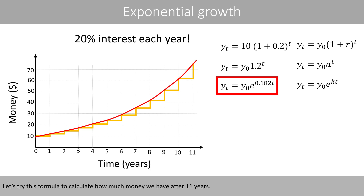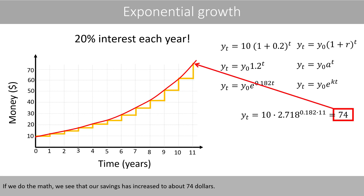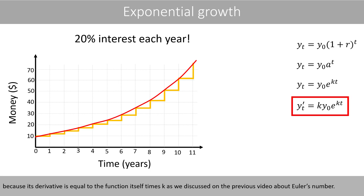Let's try this formula to calculate how much money we have after 11 years. We use Euler's number rounded to three decimal places. If we do the math, we see that our savings has increased to about $74. The reason why we use E as the base in the exponential function is that it is easier to calculate its derivative, because its derivative is equal to the function itself times K, as we discussed in the previous video about Euler's number.